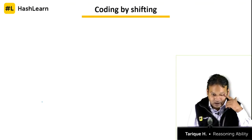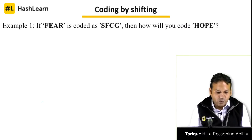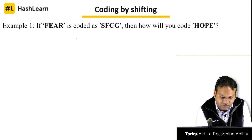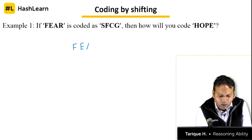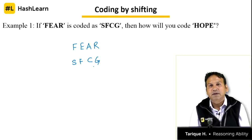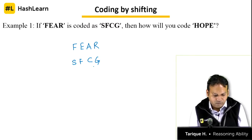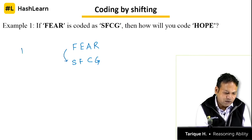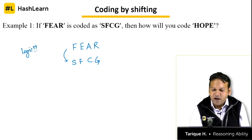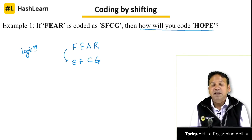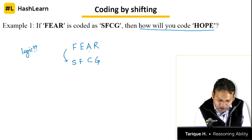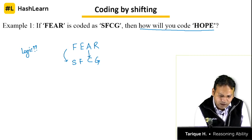Let us look at question number 1. If 'fear' is coded as SFCG, how will you code the word 'hope'? You have to find the logic first. Looking at the letters: A and C — A plus 2 is C. E plus 1 is F. Then R plus 1 is S, and F plus 1 is G. So F and R are doing cross coding, while E and A are doing simple coding — plus 1 for E and plus 2 for A.